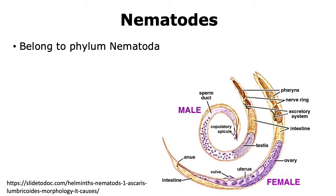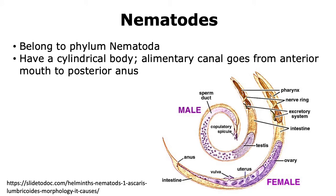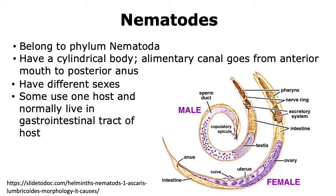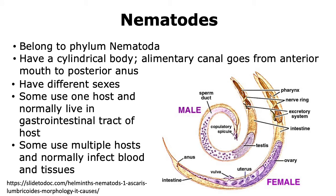Nematodes are helminths that belong to the phylum Nematoda. They have a cylindrical body and possess an alimentary canal, which is basically a digestive tube. In nematodes, the alimentary canal begins at the anterior end where the mouth is, and runs all the way to the posterior end where the anus is. Nematodes have different sexes, with males and females. Some nematodes use one host throughout their life cycle and normally live in the gastrointestinal tract. Other nematodes can use multiple hosts and infect the blood and tissues, not restricted to the gastrointestinal tract.